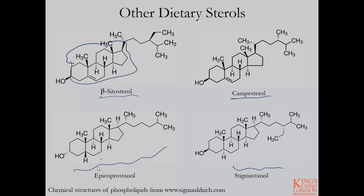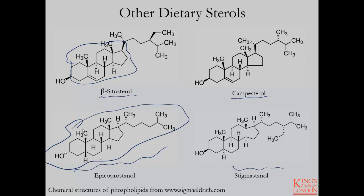Another sterol of biological importance is coprostanol — this is the byproduct of microbacterial metabolism of cholesterol. It is not used in biological processes in our body and we cannot reconvert it endogenously back to cholesterol; therefore it is a waste product, not reabsorbed, and is lost in the feces.